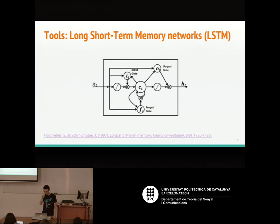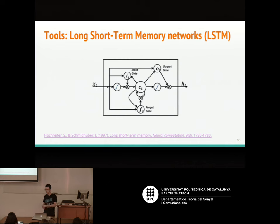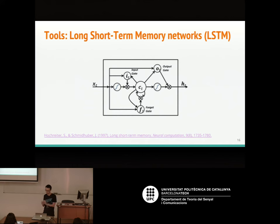To process text sequences, we are using Long Short-Term Memory networks. An LSTM block or cell, and a network is just a connection of multiple of them. These cells have a kind of long memory, making them good at processing sequences. They are an improvement over recurrent neural networks, which only keep short-term memory. We will use LSTMs to process the text sequences.